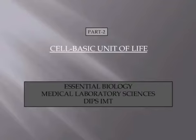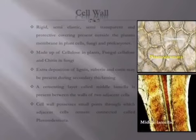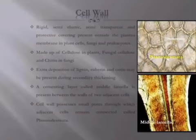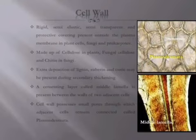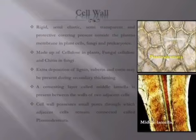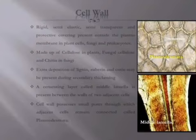We are going to start with the cell wall. Cell wall is a rigid, semi-elastic, semi-transparent and protective covering. It is a protective covering found in plants, fungus, and prokaryotes. This protects our cells from outer variations caused in the environment. Cell wall is made up of cellulose in plants, and chitin in fungus.